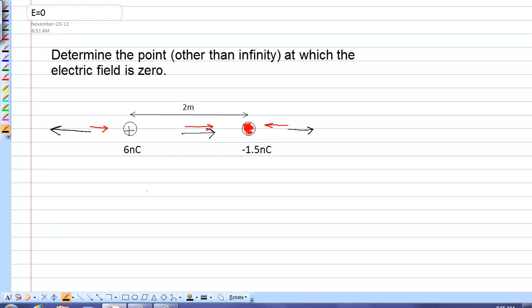We can see now that there's no hope of them canceling to the left because the black electric field vector is always going to be bigger than the red. There's no hope of them canceling between the two charges because they both point in the same direction. So our only possibility is here to the right of the smaller charge.